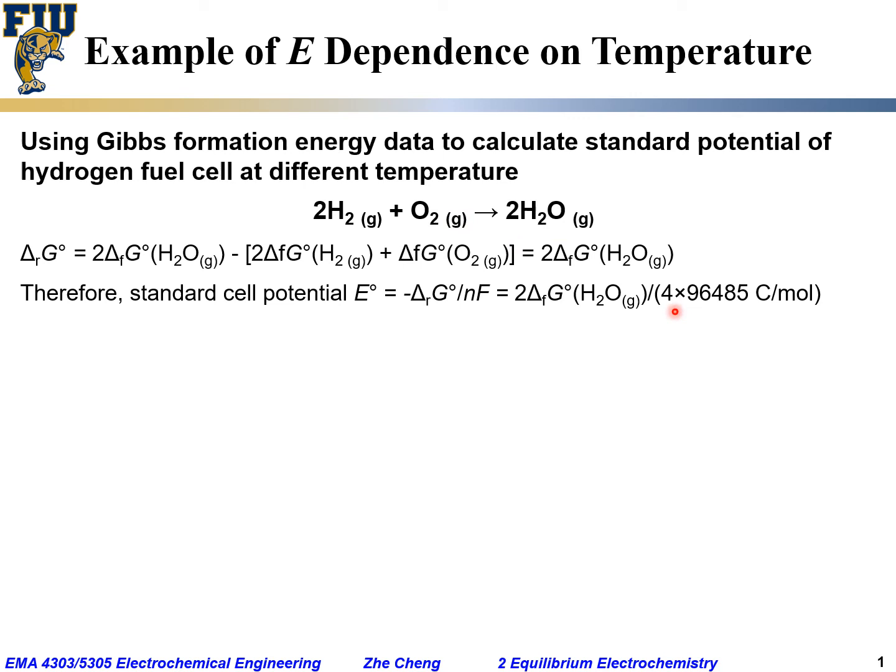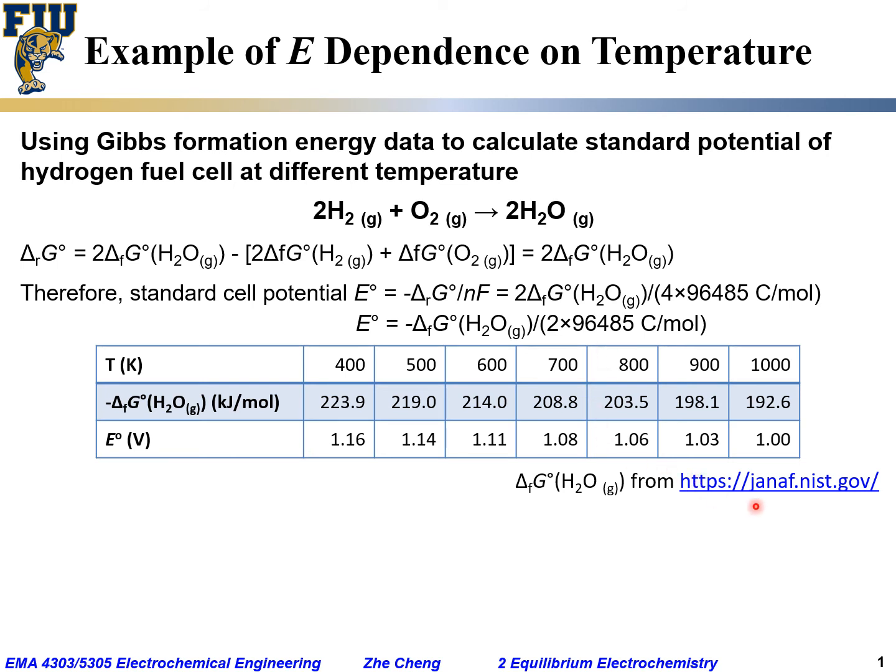Two oxygen means a total of four electrons transferred times the Faraday constant. The standard cell potential would be just the formation energy for water divided by two times the Faraday constant.